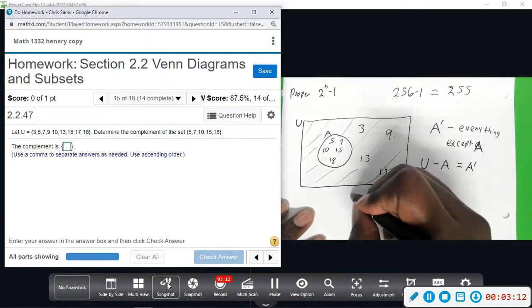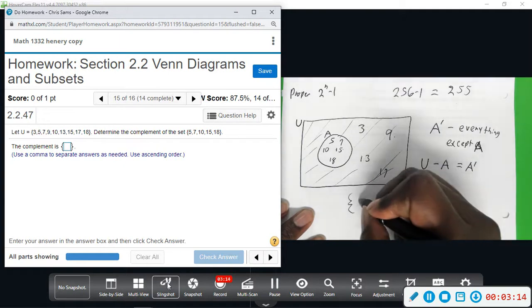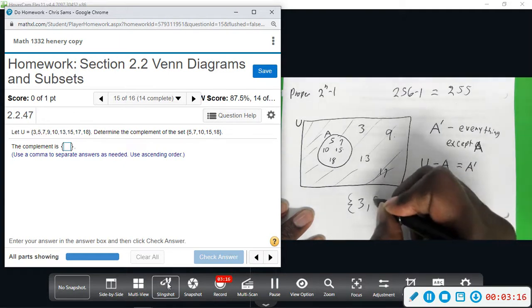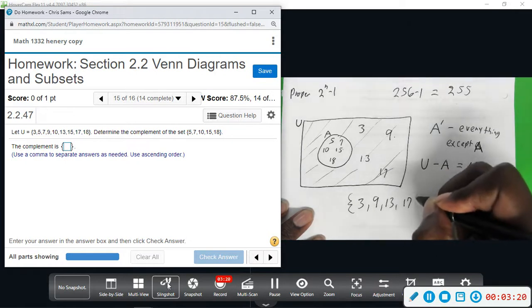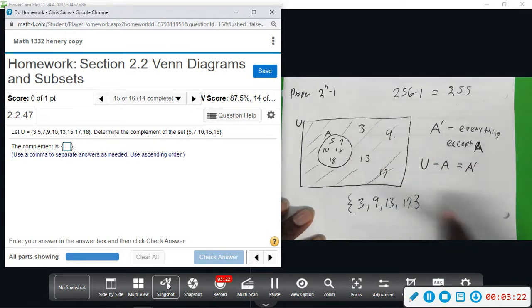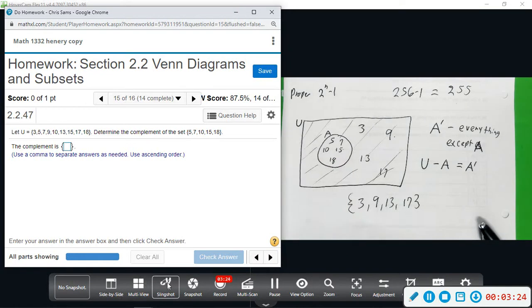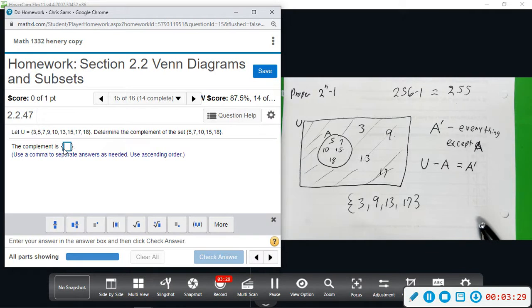So A complement, the complement of this set that we're looking for, is going to be 3, 9, 13, and 17, all of those numbers in the shaded portion, not those. They already have my curly brackets for me, so we're going to do 3, 9, 13, 17.